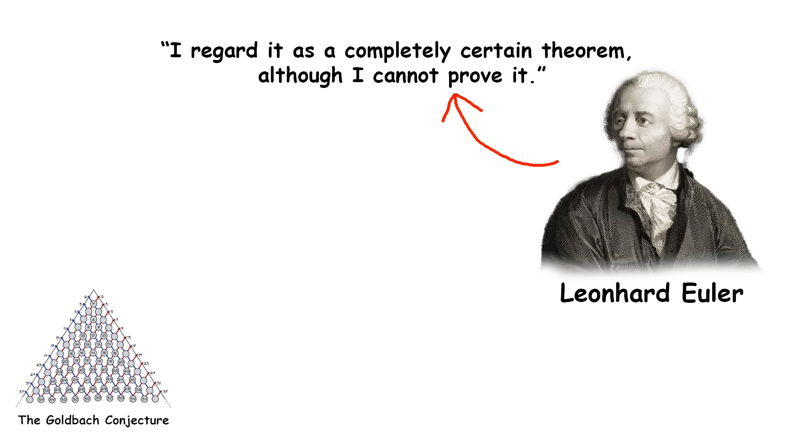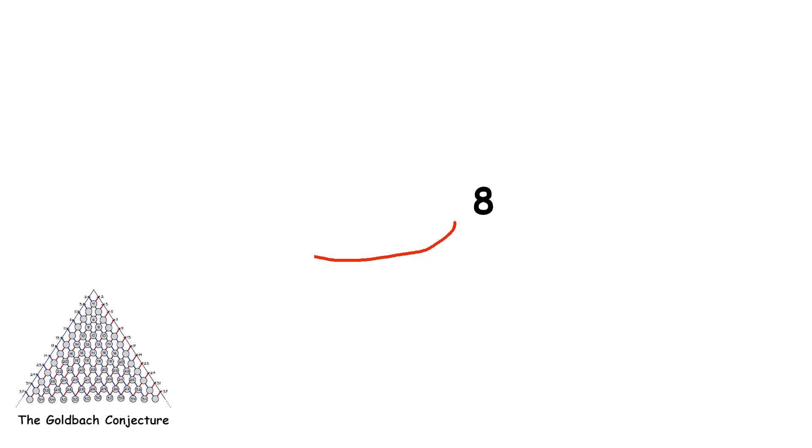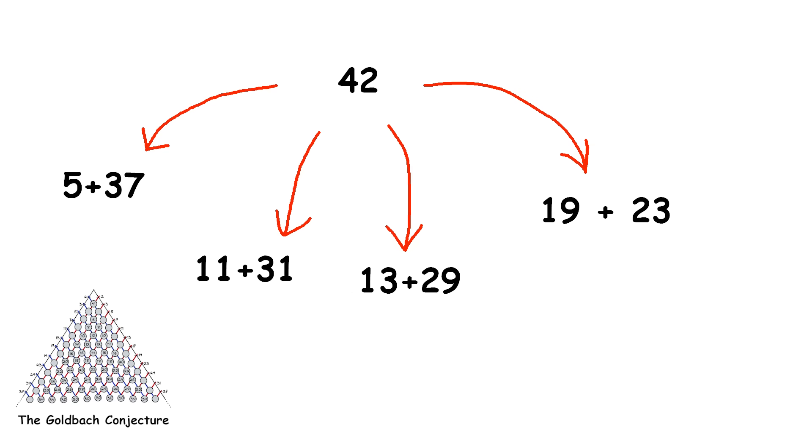When you look at larger numbers, they have more ways of being written as sums of primes, not less. Like how 3 plus 5 is the only way to break 8 into 2 primes, but 42 can broken into 5 plus 37, 11 plus 31, 13 plus 29, and 19 plus 23.